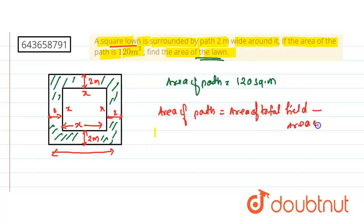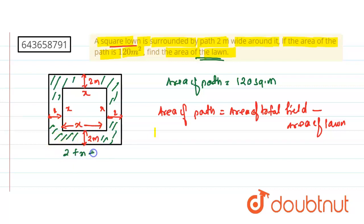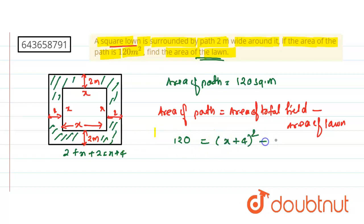What is the side length of the total field? The lawn side is x, and the path adds 2 meters on each side, so the total side is 2 + x + 2 = x + 4. The area of the path is 120, so: 120 = (x + 4)² − x², since the total field side is (x + 4) and the lawn side is x.